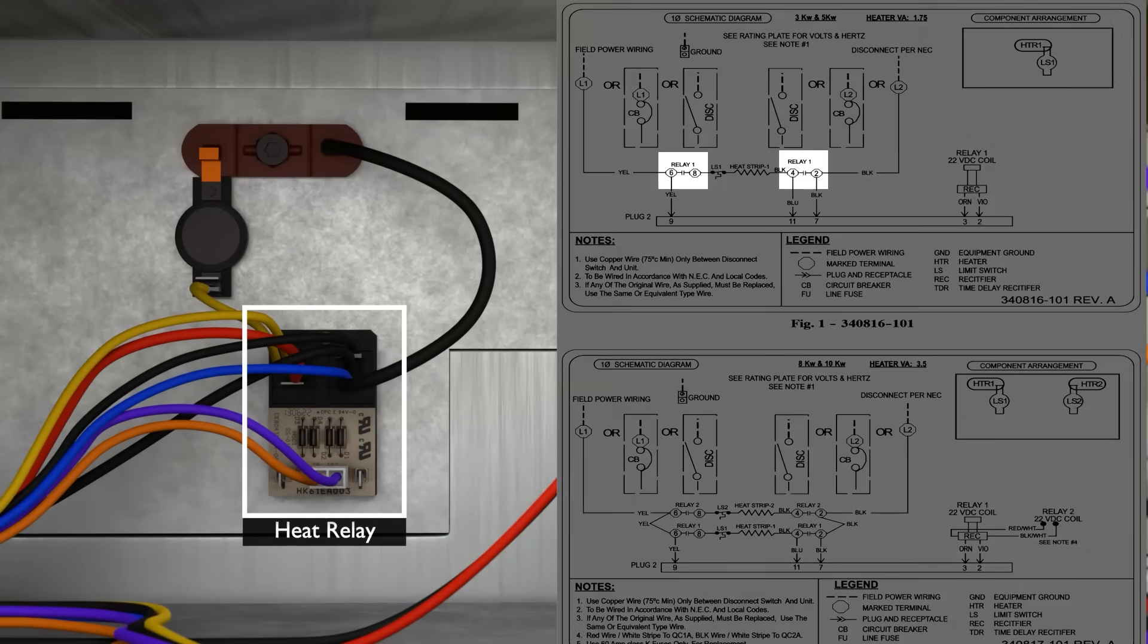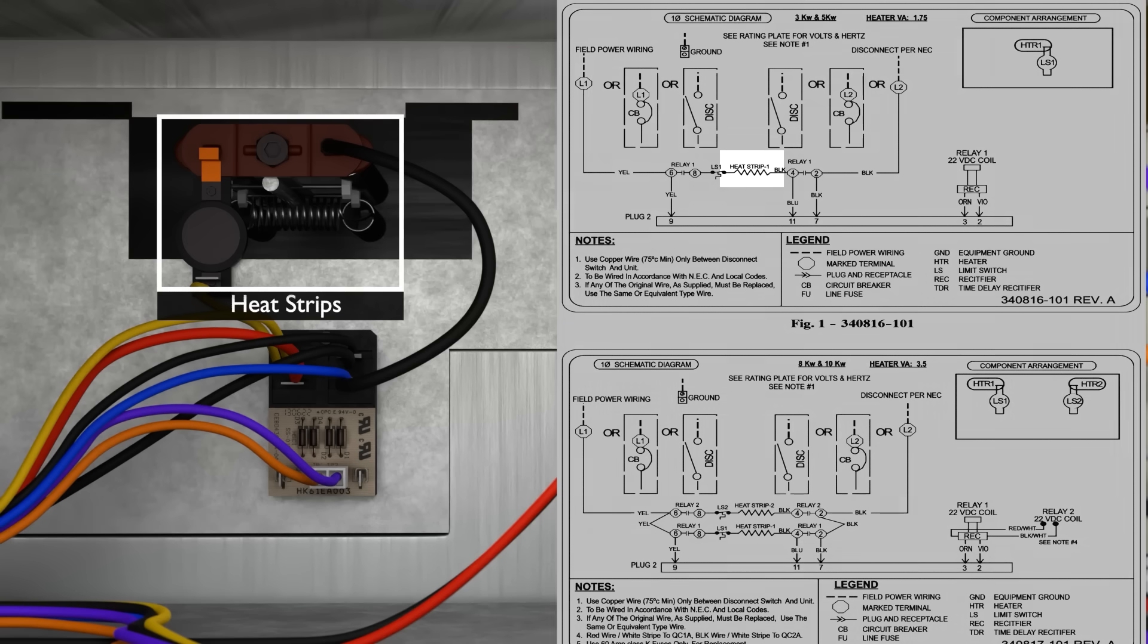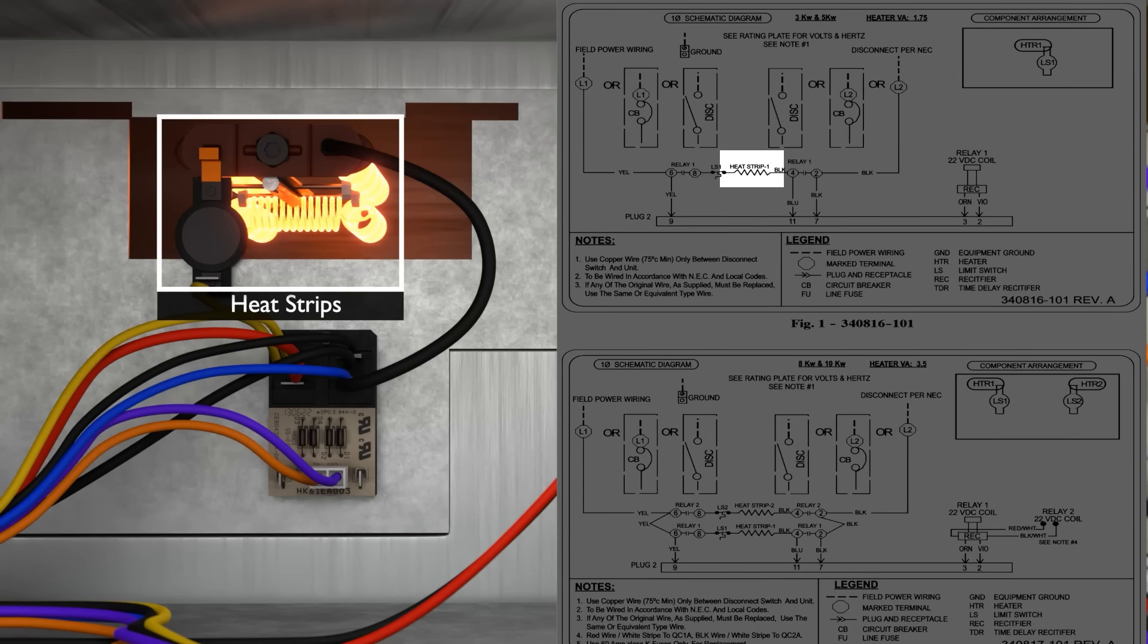Now let's take a look at our heat relay on the inside. Here we're showing the contacts for our heat relay. You can see that they're in the normally open position. These power on our electric heat strips, which act as auxiliary heat or backup heat for the heat pump.